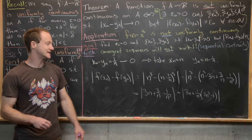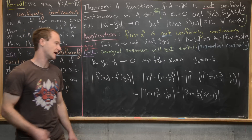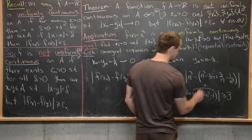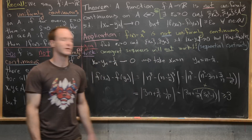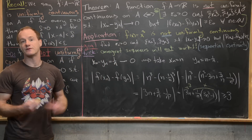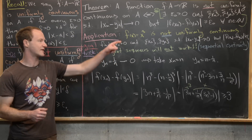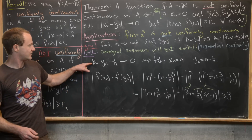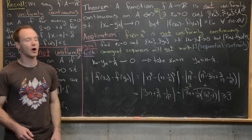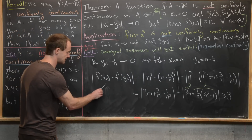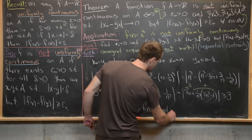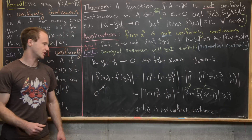For all natural numbers n, this expression is always bigger than or equal to 3, since 3n ≥ 3 and the remaining terms are non-negative. So we take epsilon-naught = 3. We have |xn − yn| → 0 but |f(xn) − f(yn)| ≥ 3 for all n, meaning it does not converge to zero. By our theorem, f(x) = x³ is not uniformly continuous, which is exactly what we wanted to show.